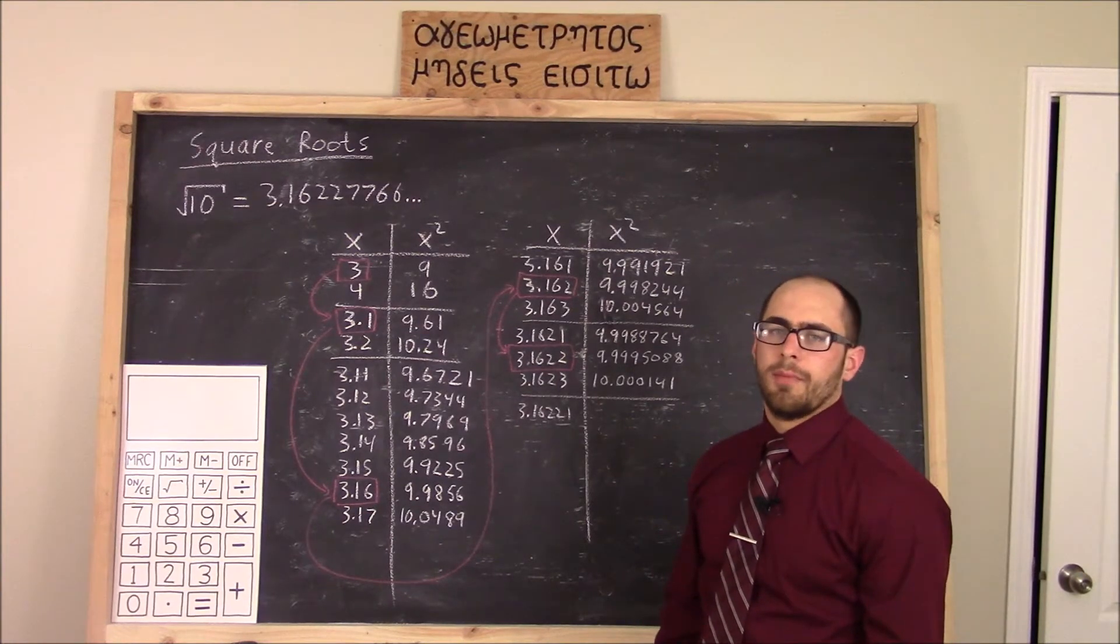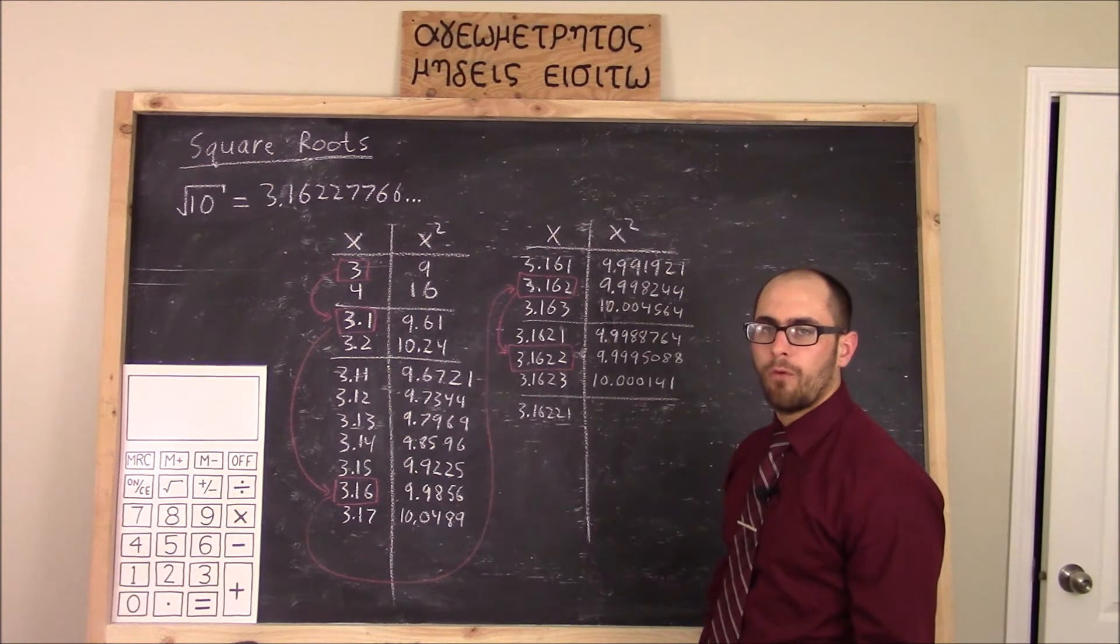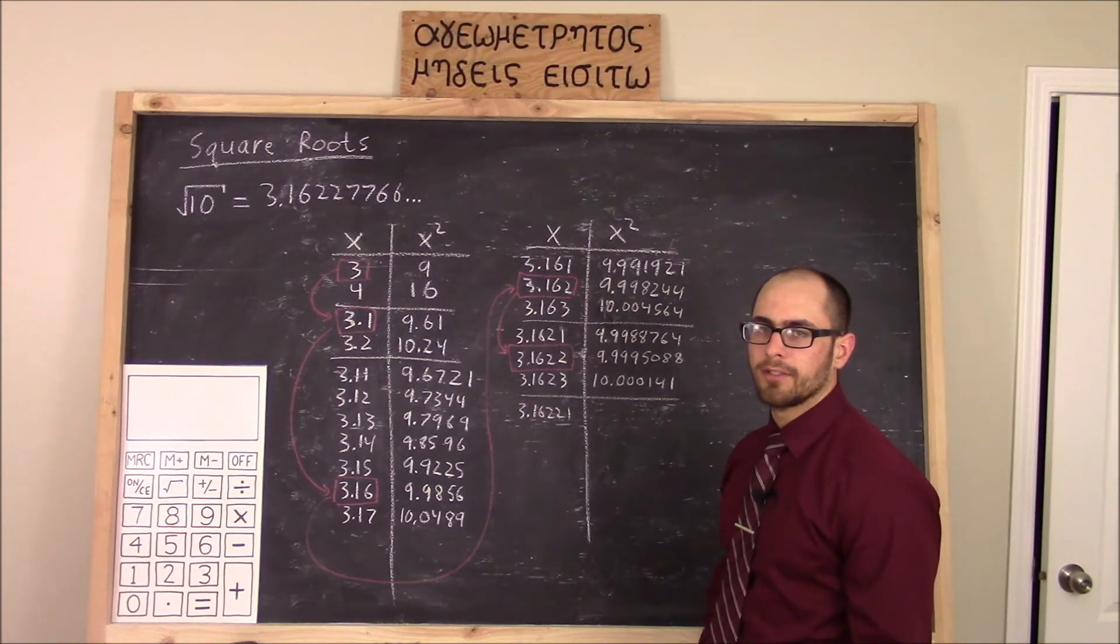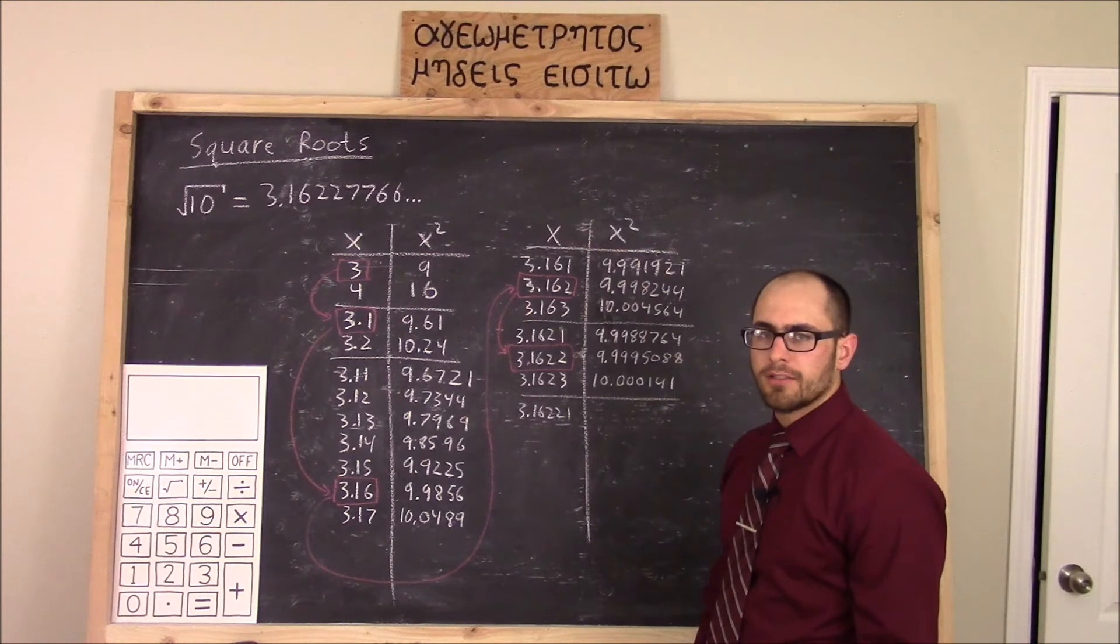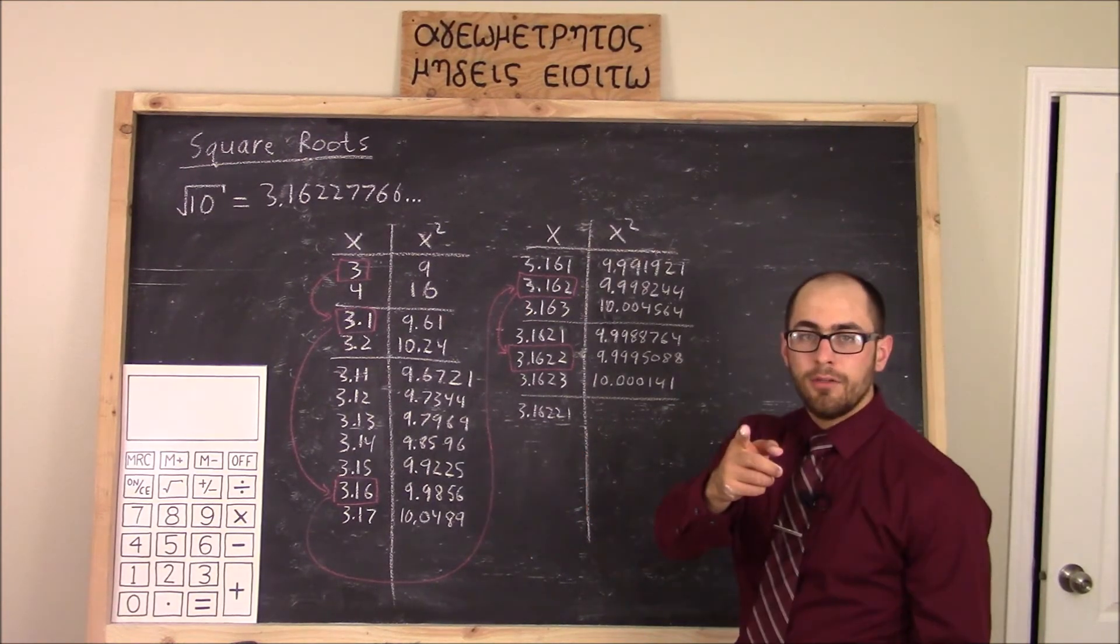The drawback with this method is that it is quite slow. I'm counting 17 iterations to get 4 decimal digits of accuracy. In the next lesson, we will look at a better method to find square roots. Stay tuned for that.